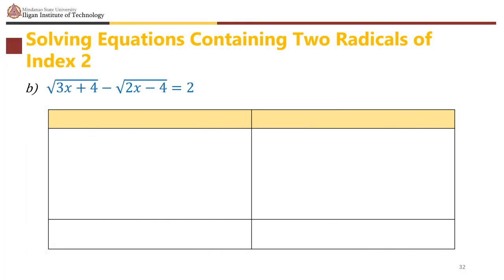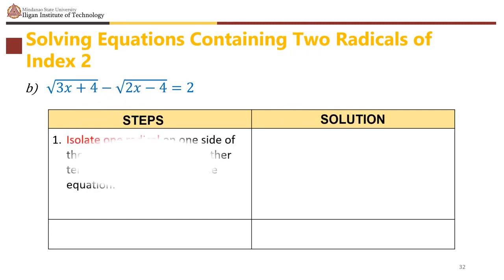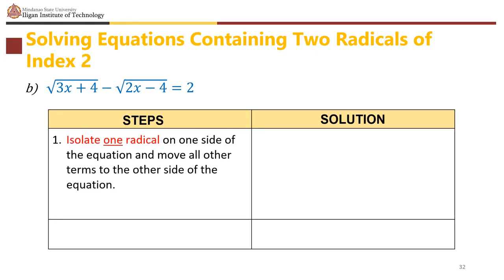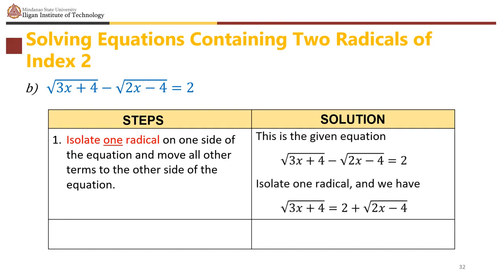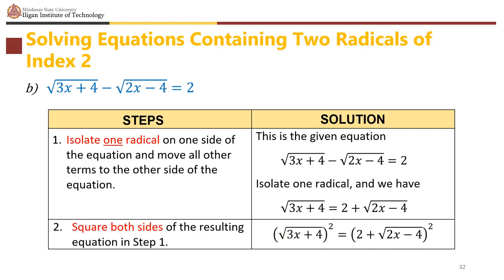For square root of (3x plus 4) minus square root of (2x minus 4) equals 2: isolate one radical. Rewrite as square root of (3x plus 4) equals 2 plus square root of (2x minus 4). Square both sides: 3x plus 4 equals (2 plus square root of (2x minus 4))².